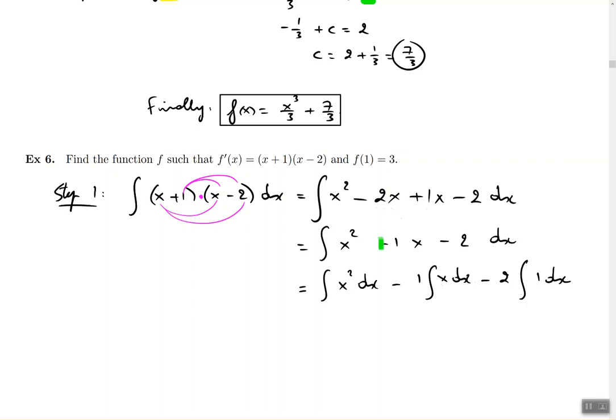And notice I'm breaking up the numbers right away. That's because property number 2 basically says it doesn't matter if there's a plus or minus. You could just ignore and do part by part, piece by piece. And then the numbers don't really matter, so you can pull them out of the integral. And so at this point, this is going to be just simply x cubed over 3 minus 1x squared over 2 minus 2x plus c.